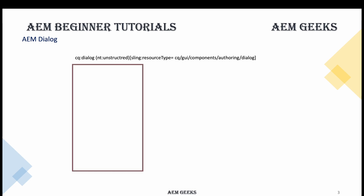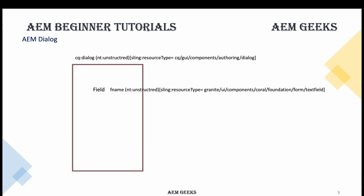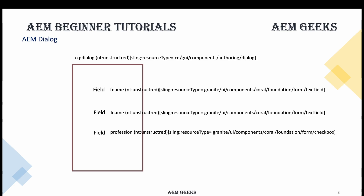You will then create other nested nodes — the name of the node can be anything. Let's say you are creating a field for first name: create a node of unstructured type and add a property sling:resourceType, pointing to the component that will render the text field. In the context of dialogue I'll use the term 'fields', but these are actual components. Let's say I need to create three fields: two text fields and one checkbox — I'll create three nodes of unstructured type and add sling:resourceType to each.